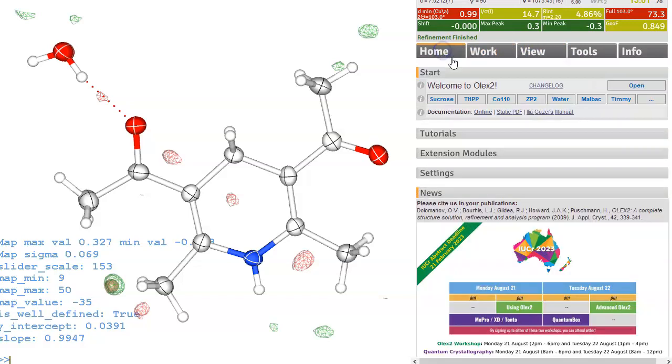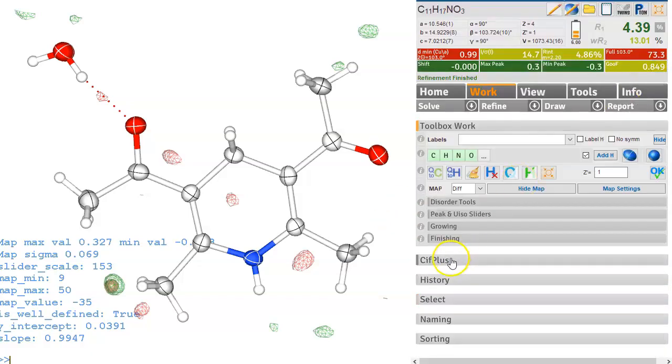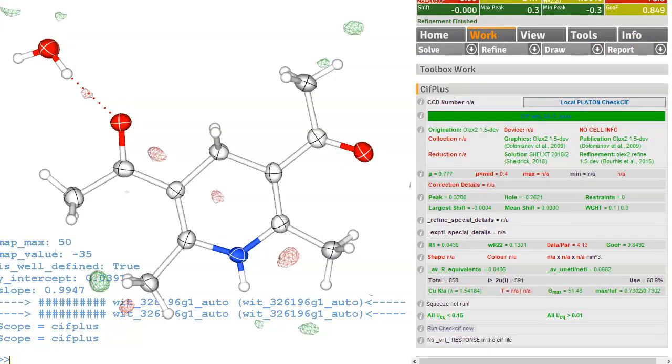We do have this little plug-in here the CIF plus so CIF plus gives you a view into the CIF file. If there's any red lines then this is going to cause trouble with the referee at some point so these bits of information here they really need to be found and filled in.